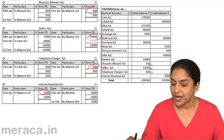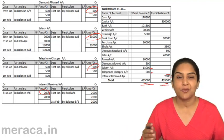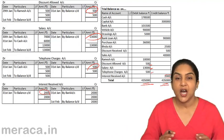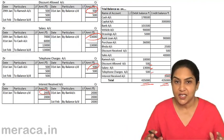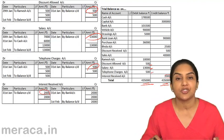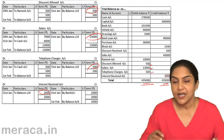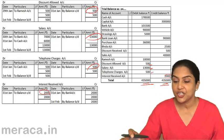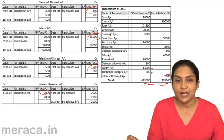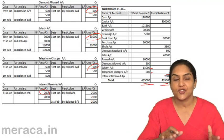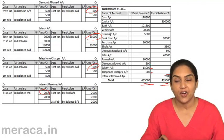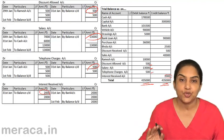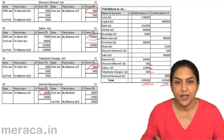Now, if we total up the trial balance, it tallies. So arithmetically, our posting and our casting was correct. Casting is the totalling of an account. This ensures the arithmetical accuracy of the transactions that we had recorded first in the journal and then posted to the ledger.